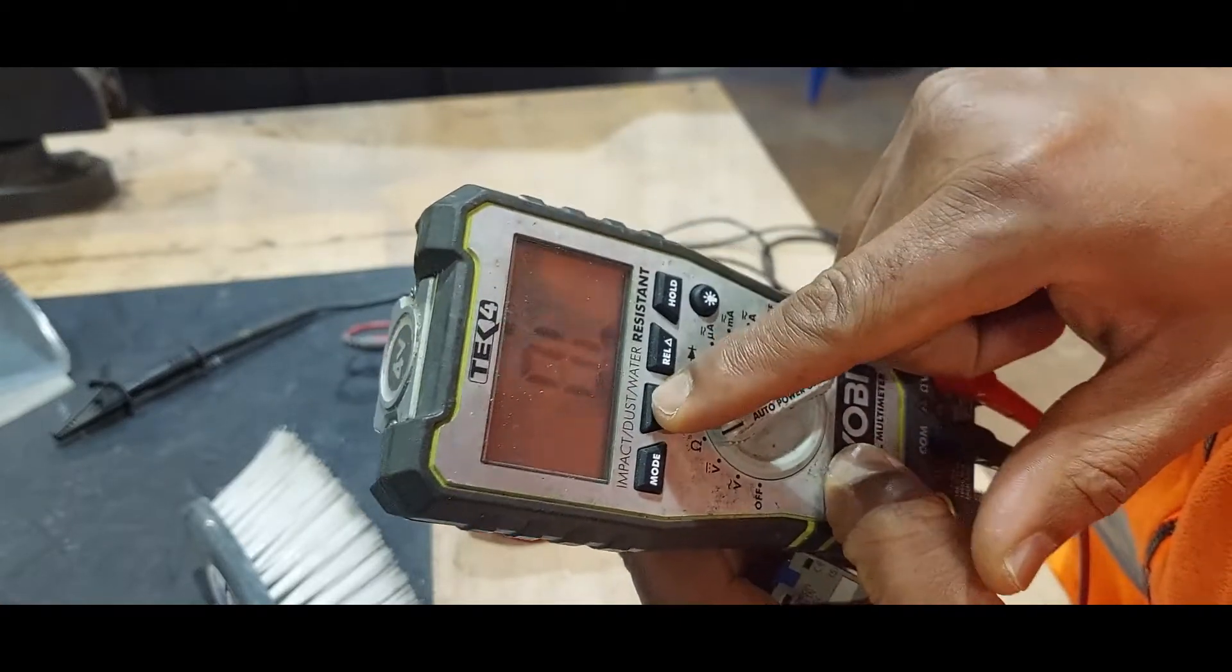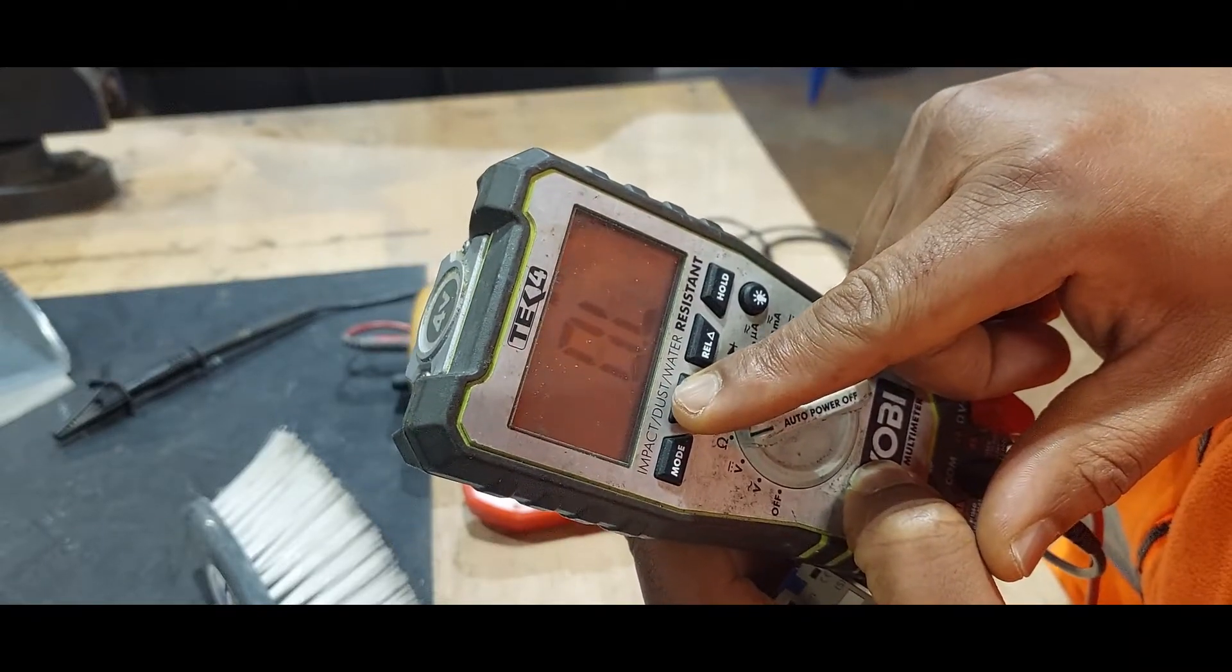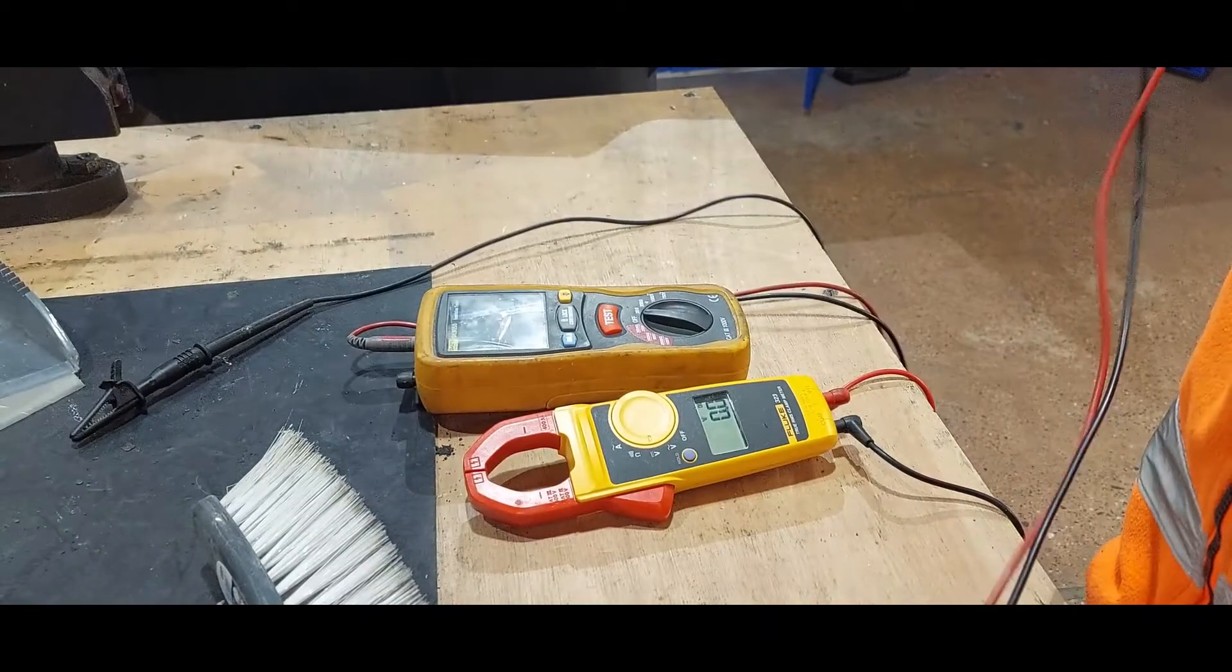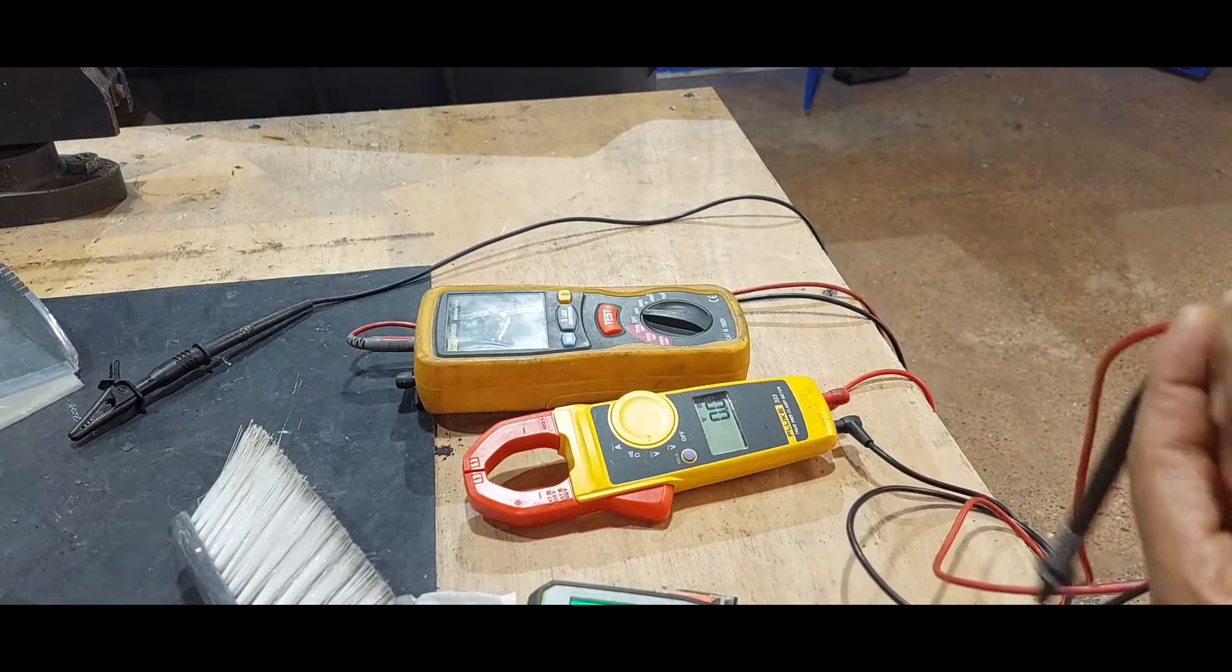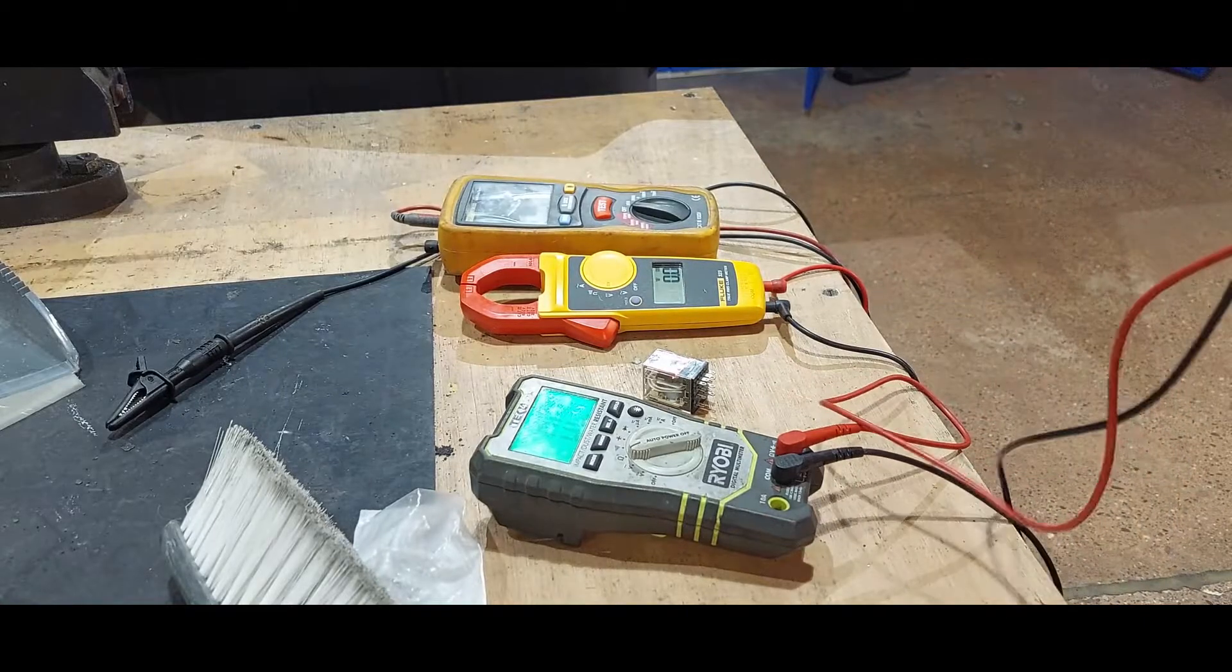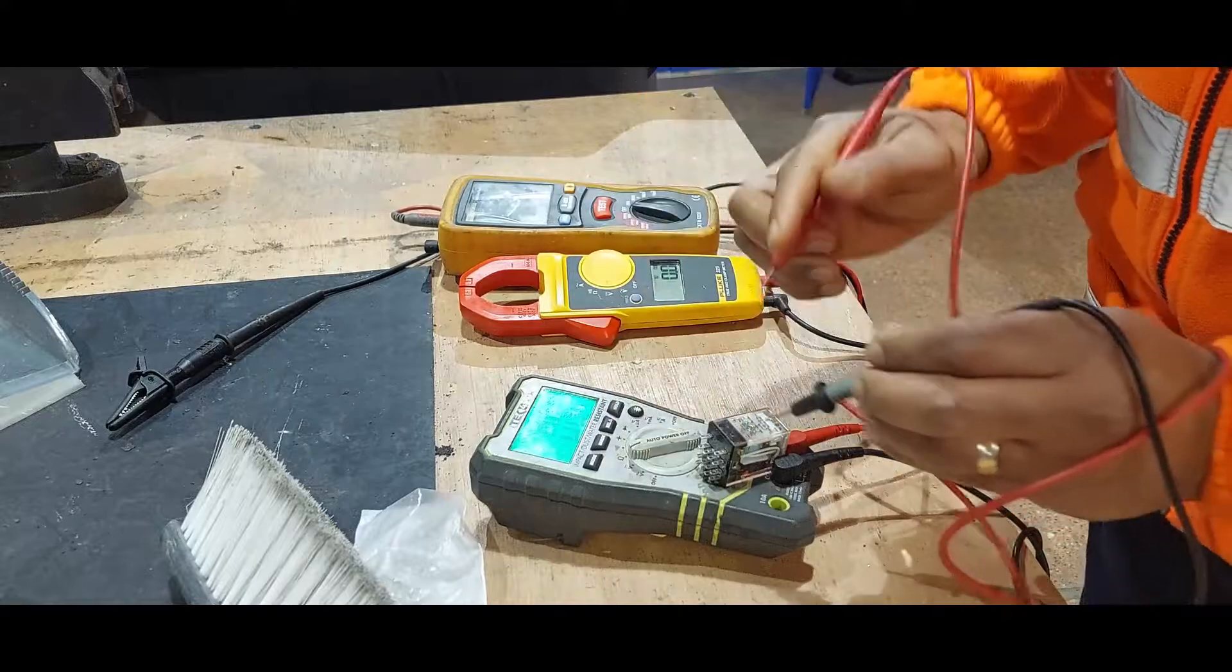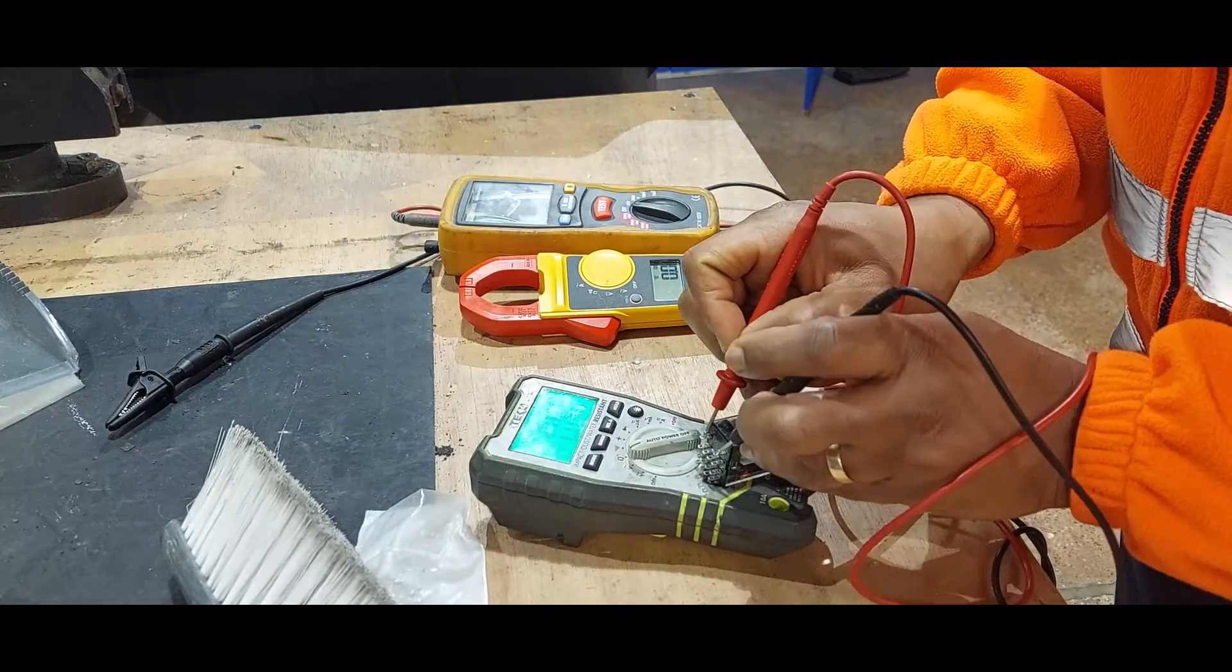If you push range, it goes into ohm. Now you can measure. Now we measure the coil of this relay. So the coil is 13 and 14. We put it on the coil. There's no reaction.